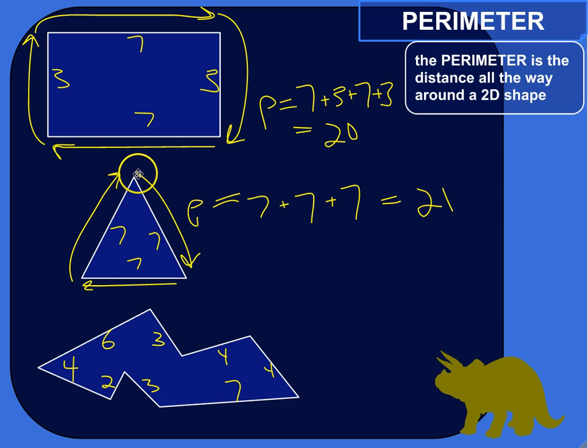Or for this triangle, 7 plus 7 plus 7. The perimeter of that triangle would be 21.